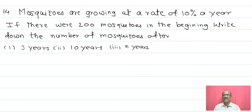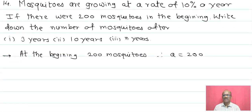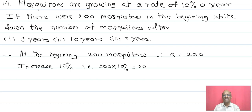Problem number 14: Mosquitoes are growing at the rate of 10% a year. If there were 200 mosquitoes in the beginning, write down the number of mosquitoes after 3 years, 10 years, and n years. At the beginning there are 200 mosquitoes, so a equals 200. They are increasing at the rate of 10%, that is 200 into 10% equals 200 into 10 upon 100 equals 20.